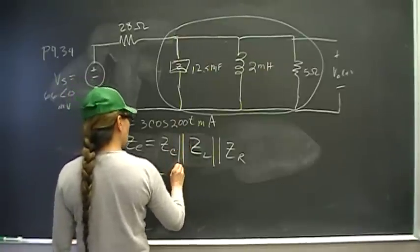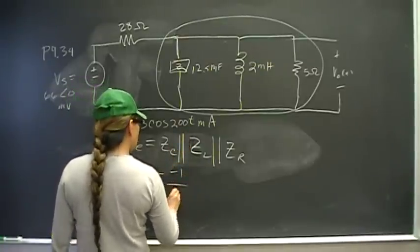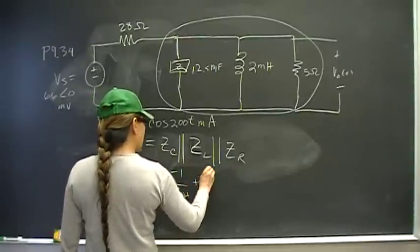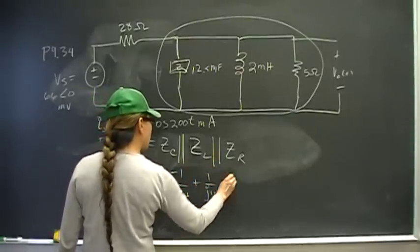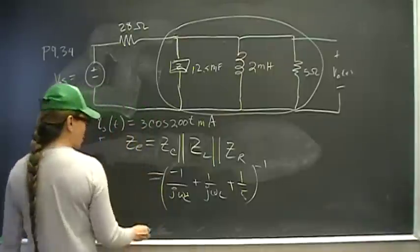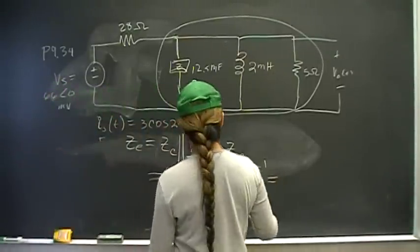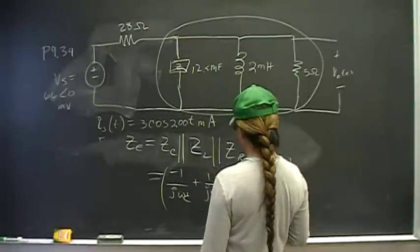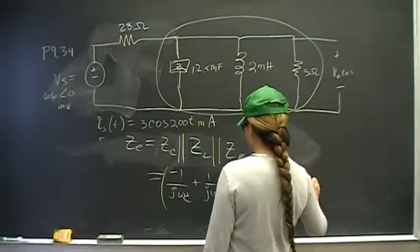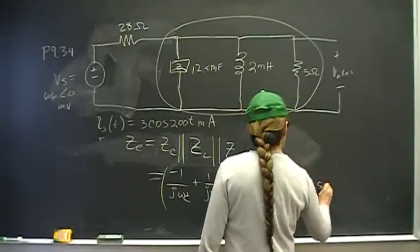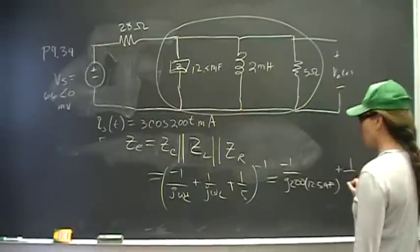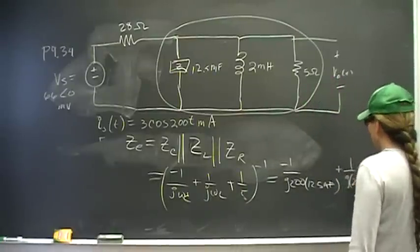Okay, what you'll enter in your calculator is negative one... The omega is 200, j200 times C, which is 12.5 millifarad—make sure not to mess up your units—plus one over j200 times 2 millihenry plus 1 fifth. That whole thing raised to the negative 1 power.